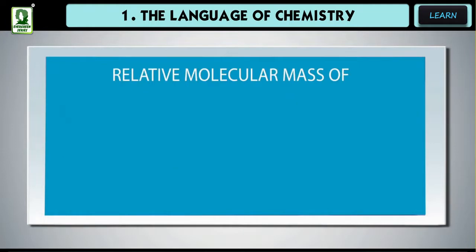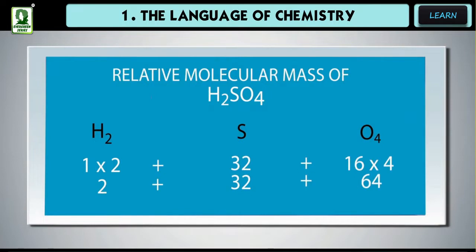For example, relative molecular mass of H2SO4 equals 2 into 1 plus 32 plus 4 into 16 equals 2 plus 32 plus 64 equals 98 amu.